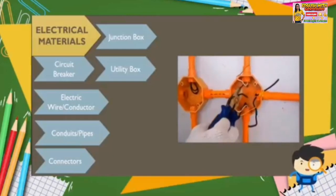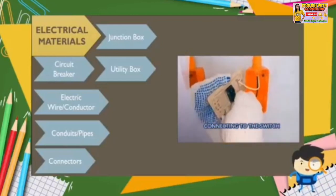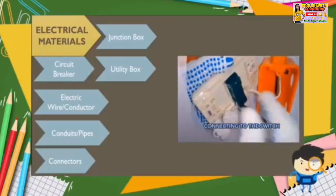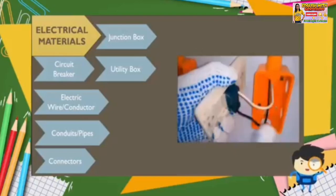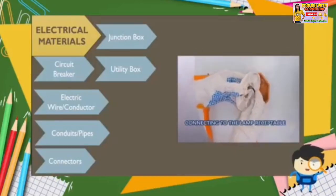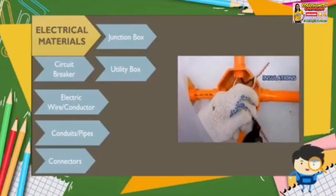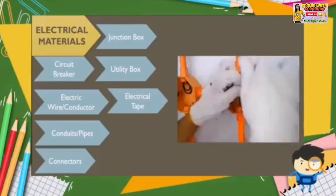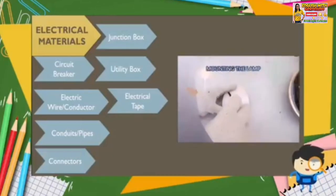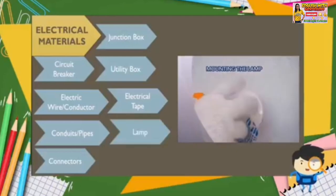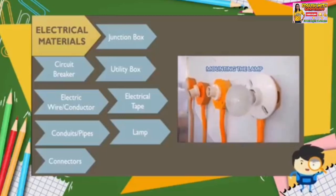These two are almost the same in function and use, but there's still a difference — we'll be discussing that later. The electrician is holding a wire and a switch to attach to the utility box, while the lamp holder will be attached to the junction box. He is also using electrical tape, which is used to provide insulation on exposed conductors or wires.